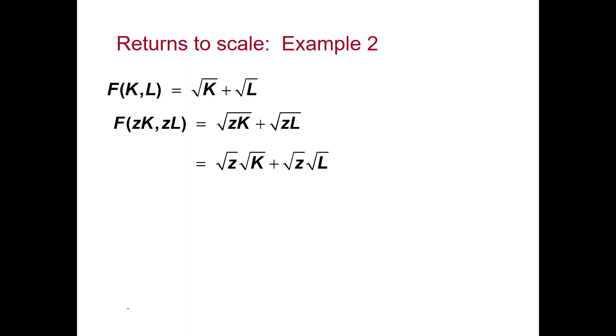We can rewrite like this and collect like terms. And so we'll have the square root of Z times the square root of K plus the square root of L. This is our original production function.